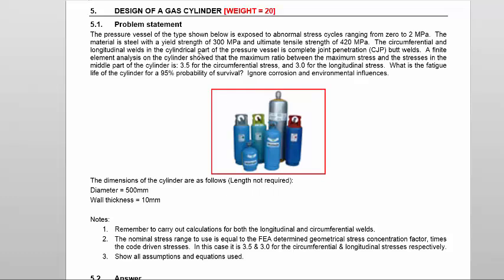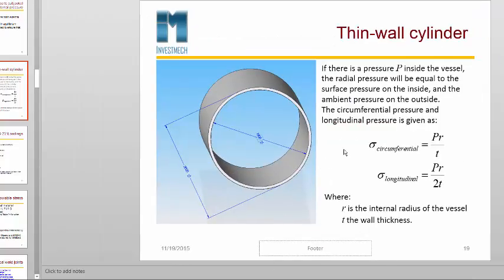The dimensions are as follows — 510 mm is given. Our next step is to calculate the thin wall cylinder stresses in the longitudinal and circumferential directions. For the circumferential stress, we have PR over T, where P is the pressure, R is the radius, and T is the wall thickness. The longitudinal stress is half that: PR over 2T.